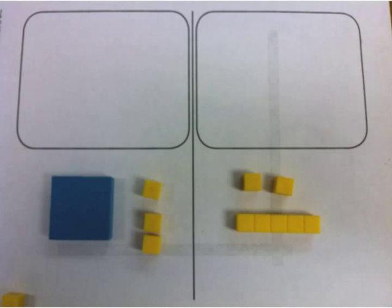With the algebraic lab gear, this is how I have it set up. Here's my variable, plus three, and then equals seven. Notice I don't use the rounded off rectangles on the top, because these represent either subtraction or negative, and I don't have subtraction or negative represented in this equation.